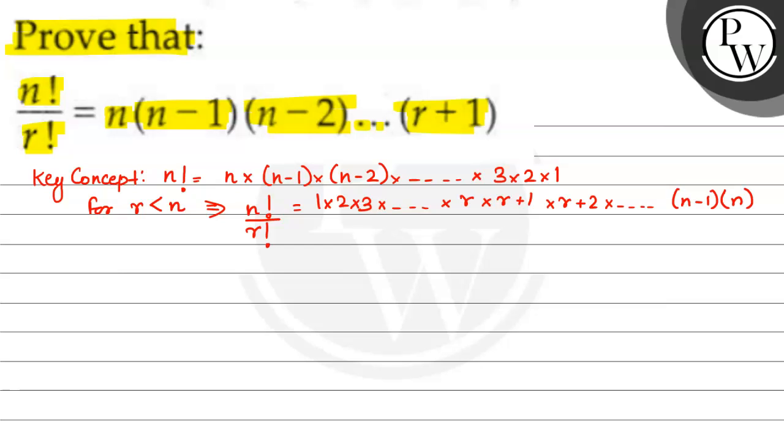यह R less than N की बात है और R factorial जो denominator में उसको मैं ऐसे लिखता हूँ. 1 multiplied by 2 multiplied by 3 so on up to R. That is it. यह इस question में specifically use होगा की concept. इस question को solve करने का इस concept के अलावा तरीका नहीं है.